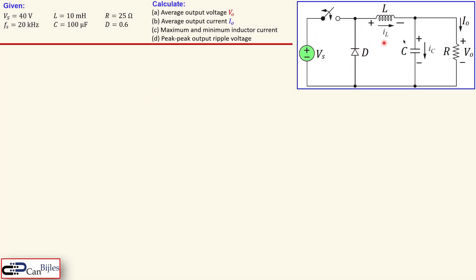This circuit is the very general generic circuit of a buck converter in a very simple case. You see here the DC input voltage, we have a switch here — it is ideal — we have the diode, the inductor, and the capacitor and our load in pure resistor form. Vo is our output voltage and Io is our output current.